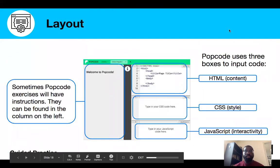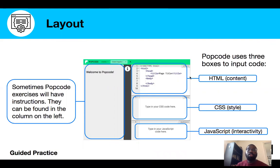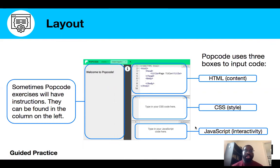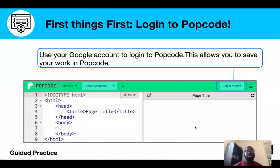Getting back here, I'm going to make sure that I covered everything. This is where the instructions will be. You'll write your HTML, which is your content, in this top part, CSS in this part, and your JavaScript, which gives you your interactivity, in that part. You're going to use your Google account to log into PopCode. If you haven't done that already, make sure you do that — this allows you to save your work. If you do not log in, your work will not be saved, so make sure to log in.